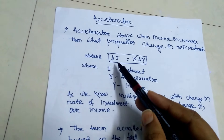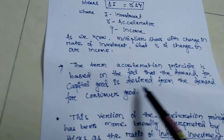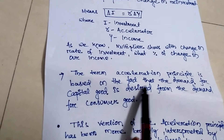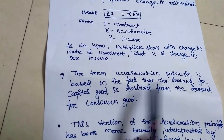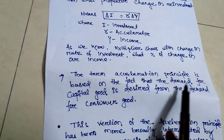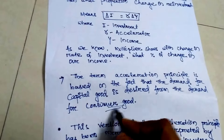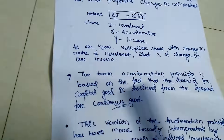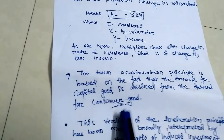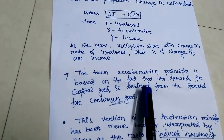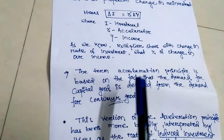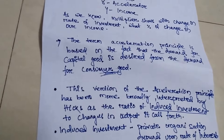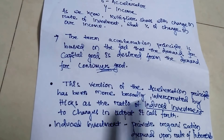The acceleration principle is based on the fact that demand for capital goods is derived from the demand for consumer goods. It shows the relationship between capital goods and consumer goods. The acceleration principle gives importance to consumer goods.